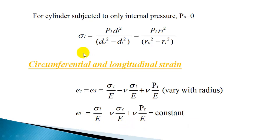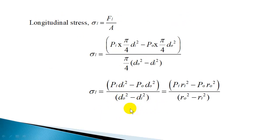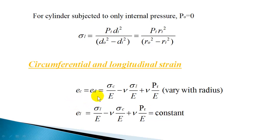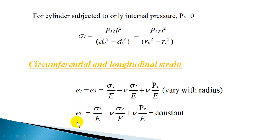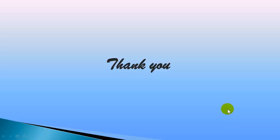In today's class, we learned how to calculate the longitudinal stress induced in a thick cylinder. When external pressure is neglected, the simplified expression is used. When external pressure exists, the full equation applies. You can find the circumferential strain at any radius by substituting the corresponding hoop stress and radial pressure values. Longitudinal strain can also be calculated using the given expression. Once you have both strains, you can find the change in circumference and change in length of the cylinder. Thank you for watching.